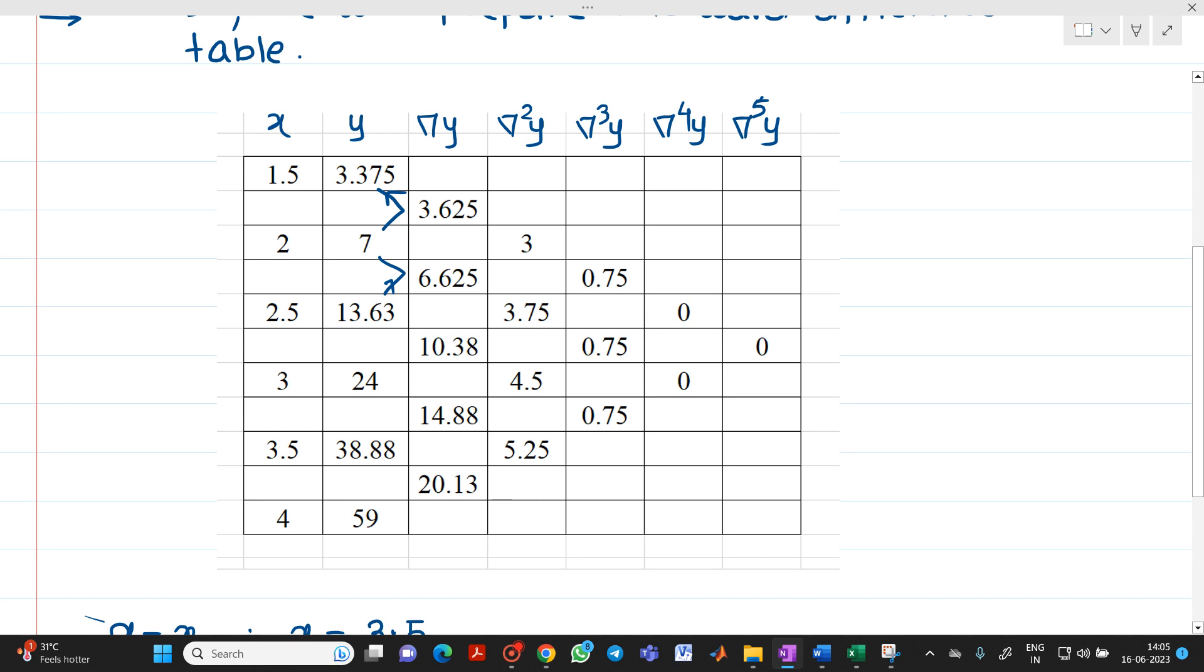Now as it is expected to find out the value of this, so this will be your xn. Its corresponding value will be yn. Now here you will get this value is del yn.